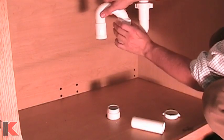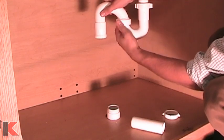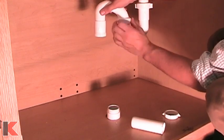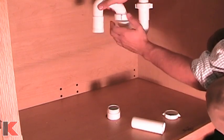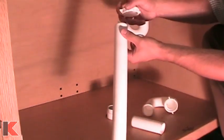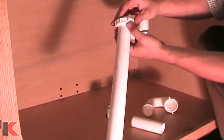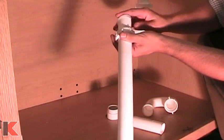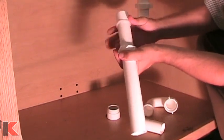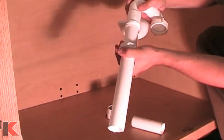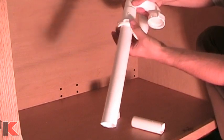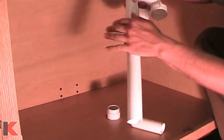Unscrew and detach the second J-bend. Feed a slip joint nut followed by a slip joint washer onto the drain tube. Attach the high end of the J-bend to the drain tube by hand tightening the slip joint nut and washer.